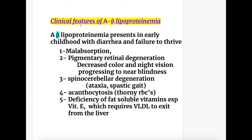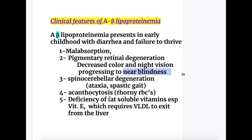Clinical features of A-beta lipoproteinemia: it presents in early childhood with diarrhea and failure to thrive. The features include: number one, malabsorption; number two, pigmentary retinal degeneration with decreased color and night blindness, which progresses to near blindness later in life; number three, spinocerebellar degeneration leading to ataxia and spastic gait; number four, acanthocytosis — thorny red blood cells; and number five, deficiency of fat-soluble vitamins, especially vitamin E.